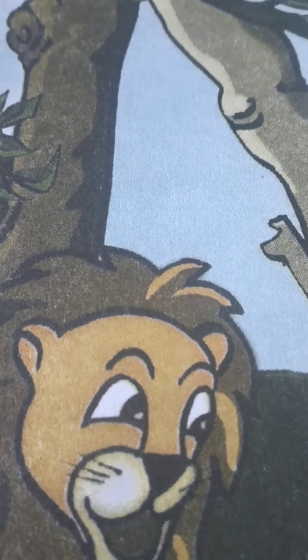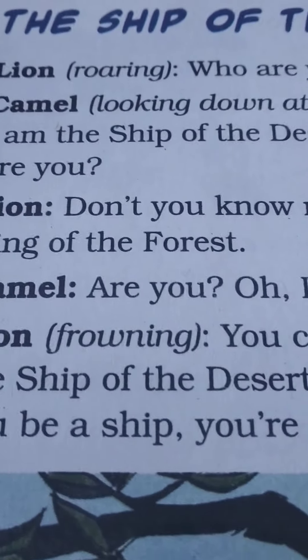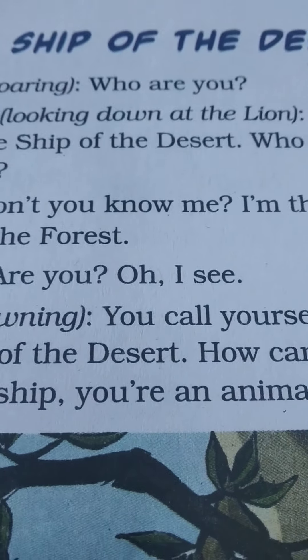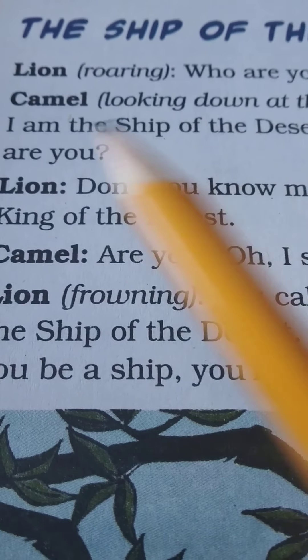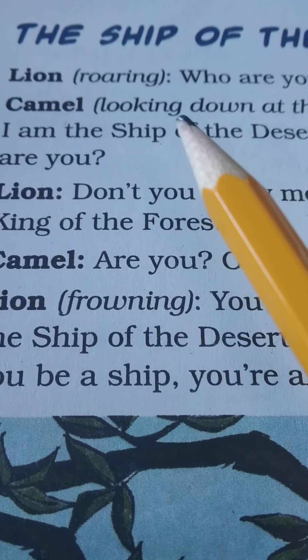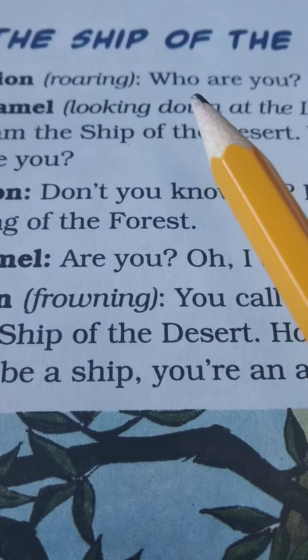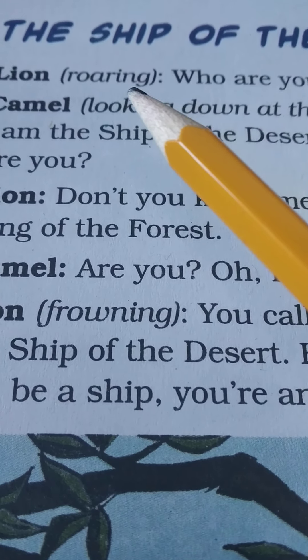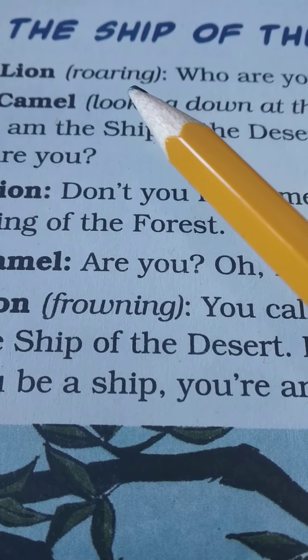So this story is written like a play. What's the difference? Let's look at the first sentence together. It says, lion roaring. Who are you? You see how it's got the lion in bold and then two dots — and then this is his dialogue, this is what the lion says.